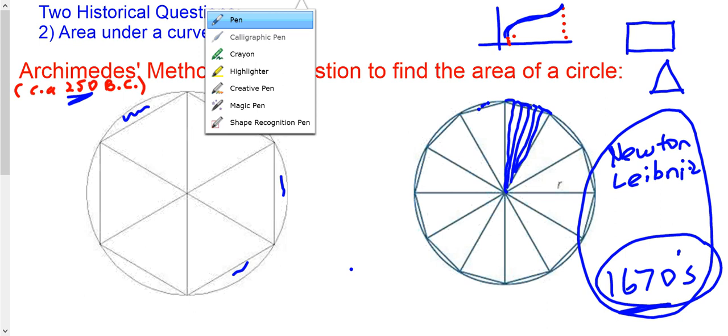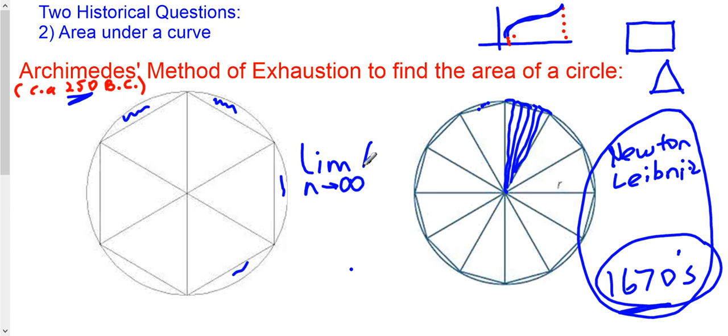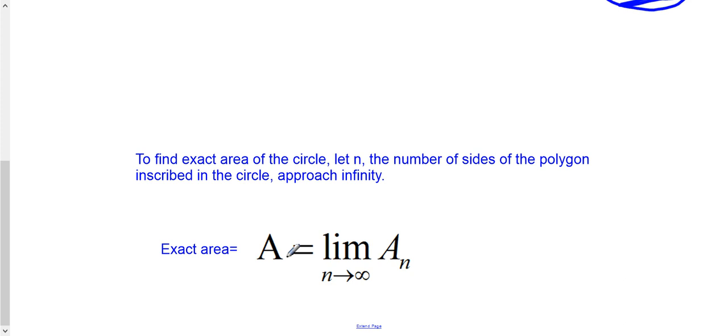And the notation they used was this. We're going to talk more about this later. Limit as n goes to infinity of, let's say, a sub n, area of a polygon using n sides. So in that limiting case, we're going to find a perfect coverage, perfect area of that circle. So you might write something like this. In general...